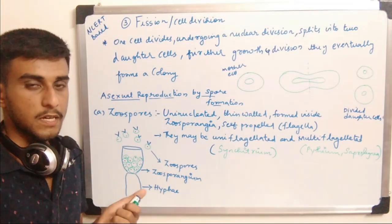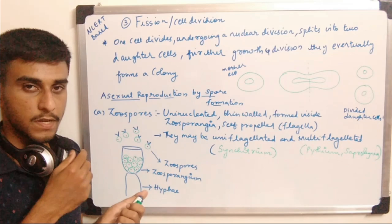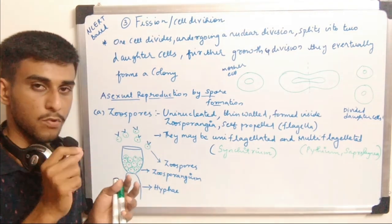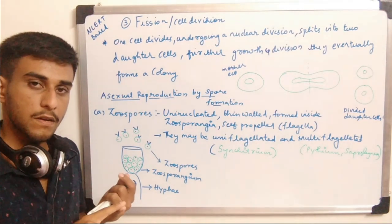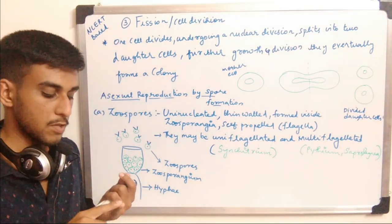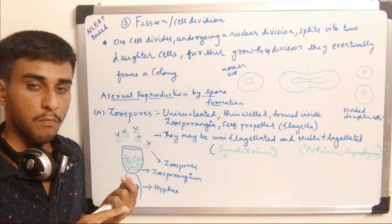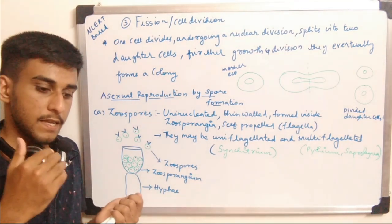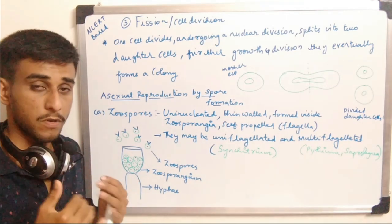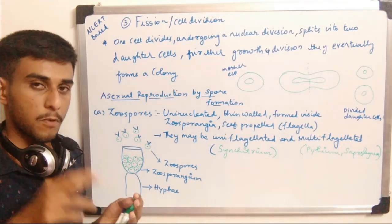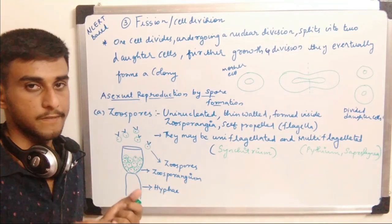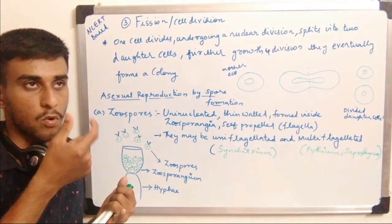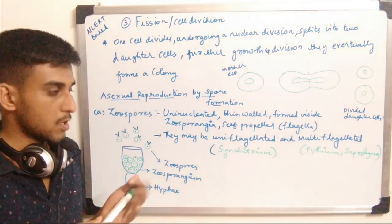Zoospores are uninucleate — they contain one nucleus. The uniqueness of zoospores compared to other spores is that they are motile, meaning self-propelled. For propulsion they have flagella — they may be uniflagellate or multiflagellate. Uniflagellate means they have only one flagellum used for propulsion.